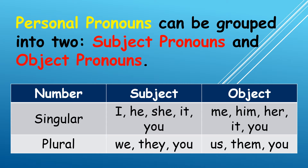For plural nouns that need to be replaced, we can use we, they, and you if it is the subject of the sentence, and us, them, and you if it is the object of the sentence.